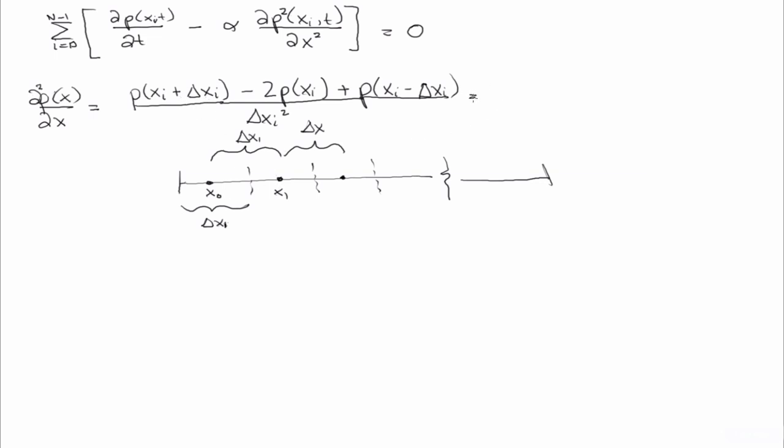And so another way to evaluate this would be, if we wrote this for any point xi in the domain, this would be p evaluated at x of i plus 1, minus 2p xi, plus p of xi minus 1, all over delta x squared.